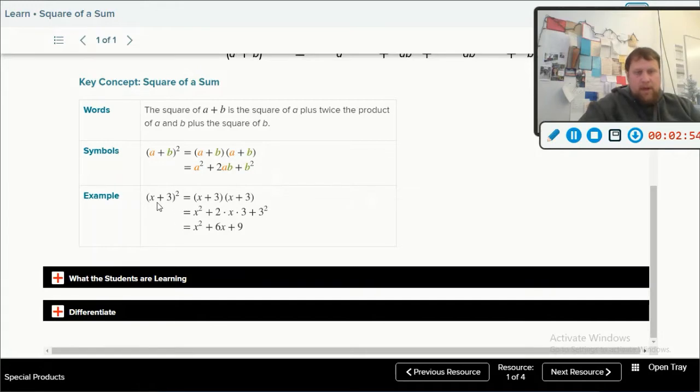Let me see our nice example here where (x + 3)² is x plus 3 times x plus 3, which is going to be a squared or x squared plus 2 times a times b. 2 times x times 3 is 6x plus b squared, which is 3 squared or 9. Boom. Pause this, write it down. We're going to go on to some examples next.